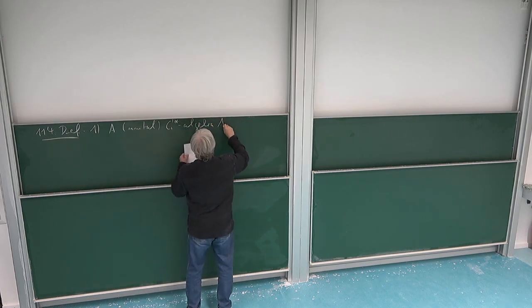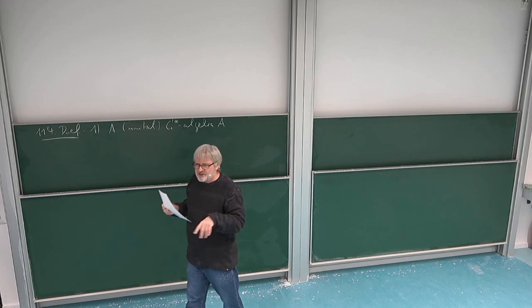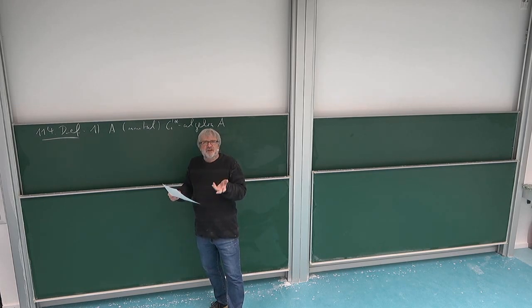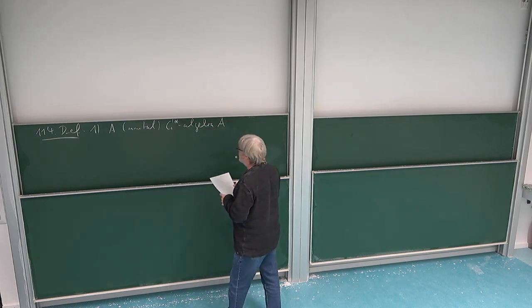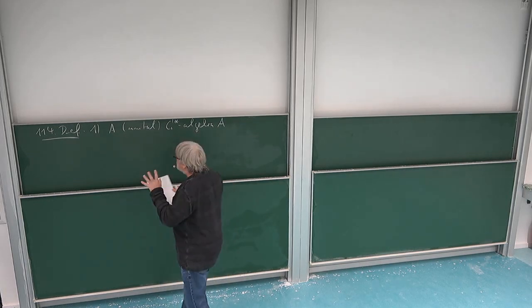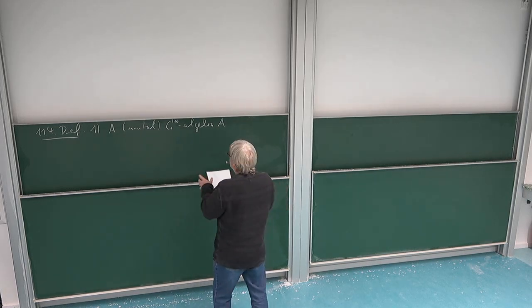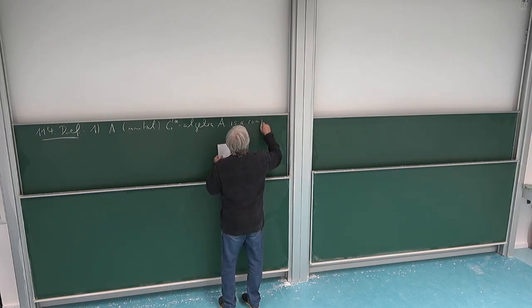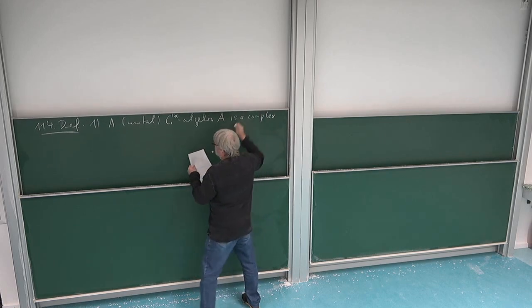What is this? I mean concretely it's a bounded sub-algebra of B of H which is closed in the operator norm. But of course it can also be defined in an abstract way, and there it is a Banach algebra. So it's a C-star algebra A. This is a complex algebra, an algebra over C.